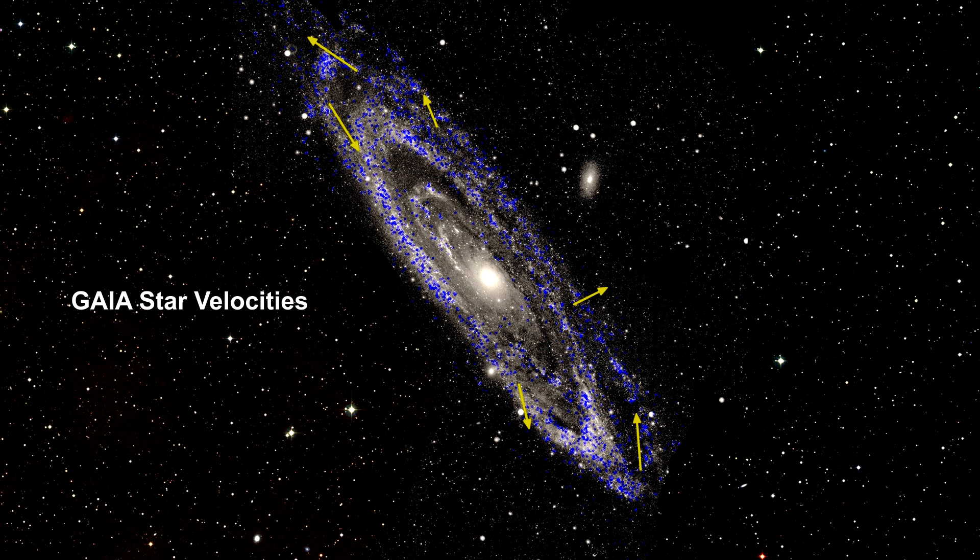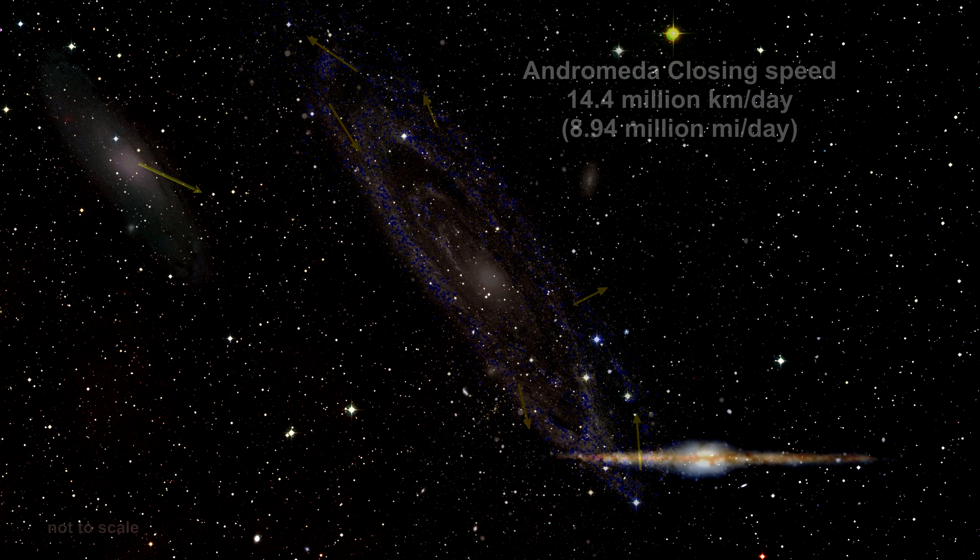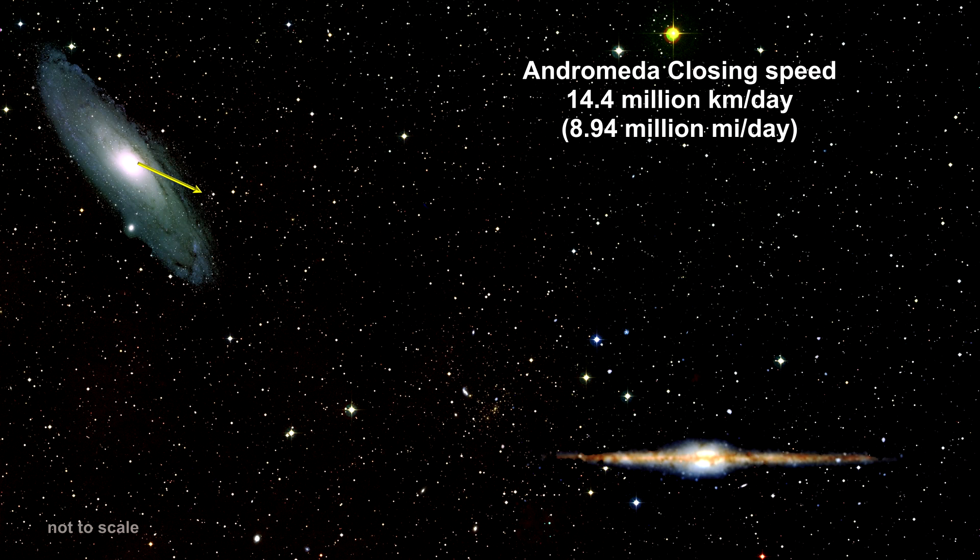Careful analysis of Andromeda's proper and radial motion indicates that it is on a collision course with our Milky Way. We'll conclude our coverage of Andromeda with a look at its closing velocity.